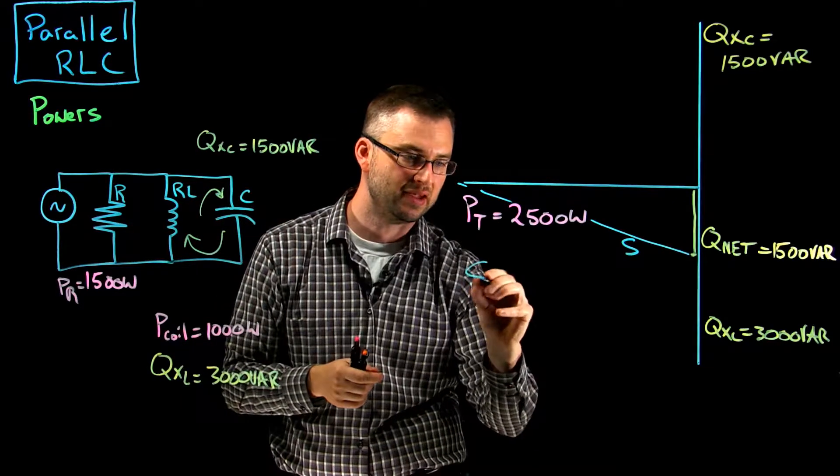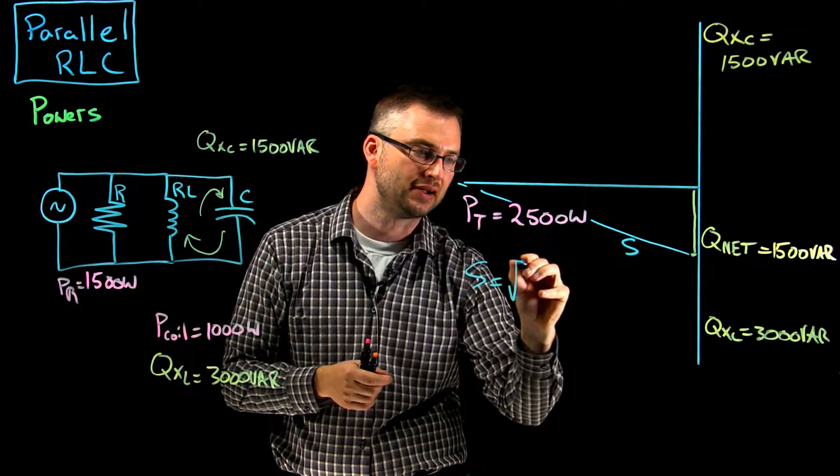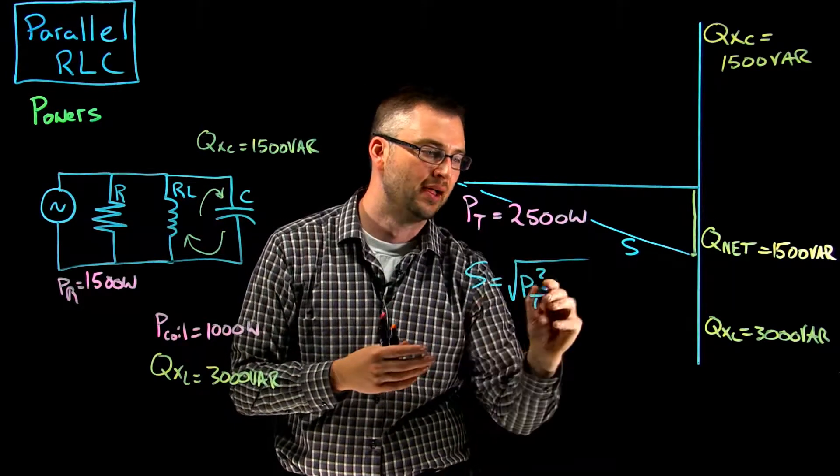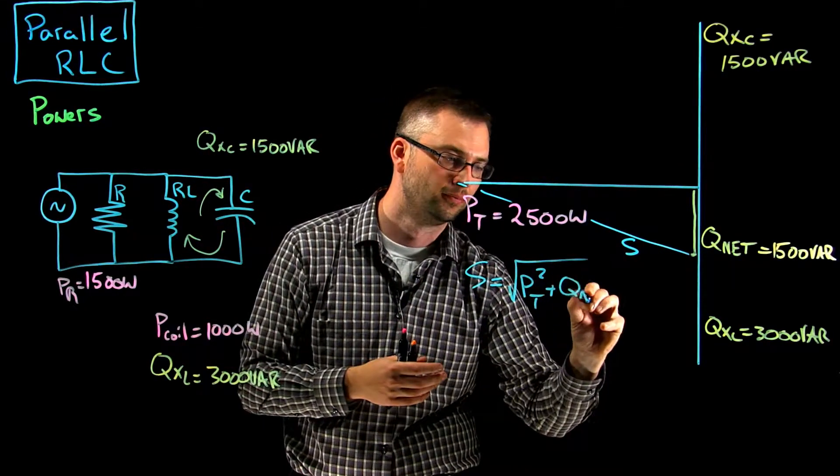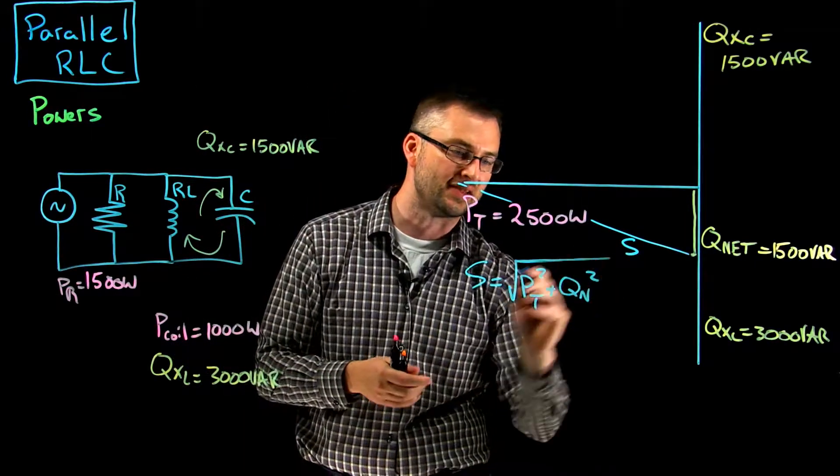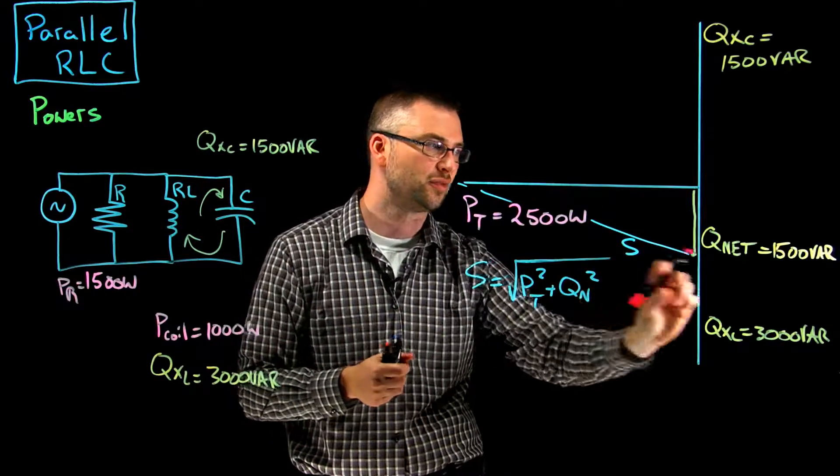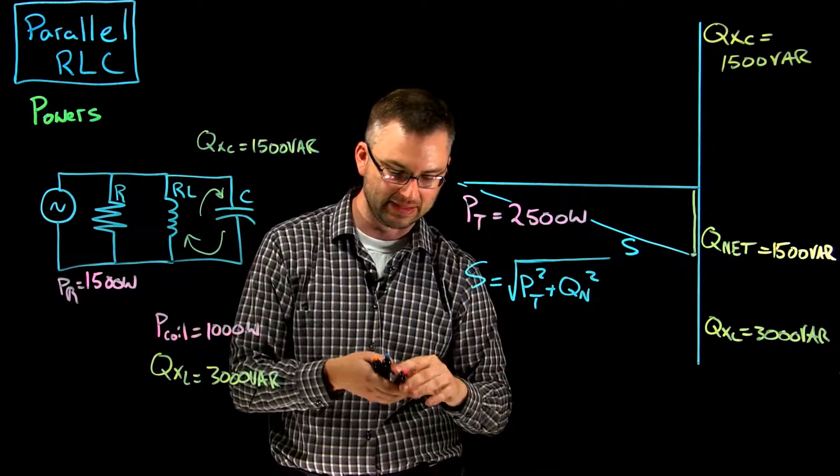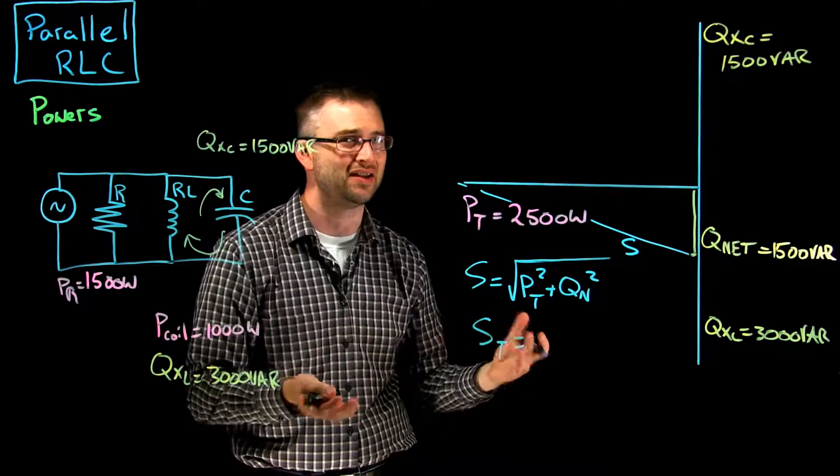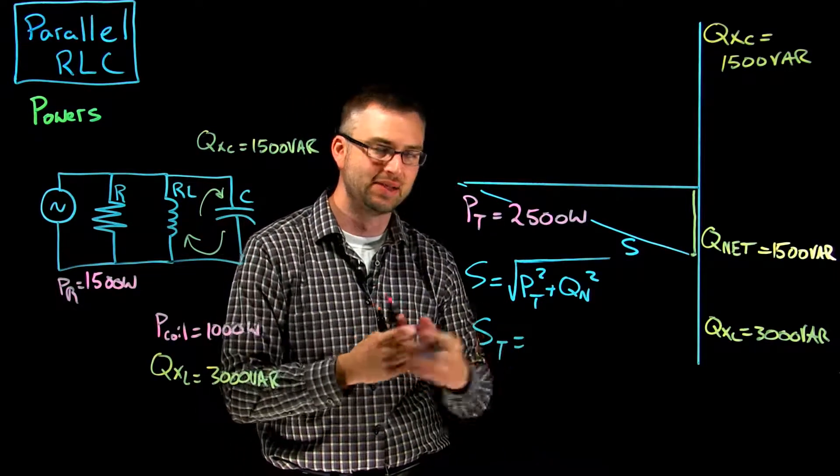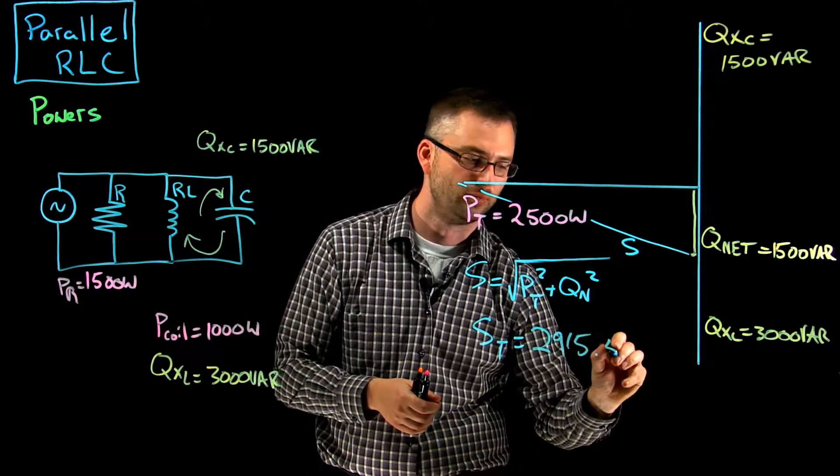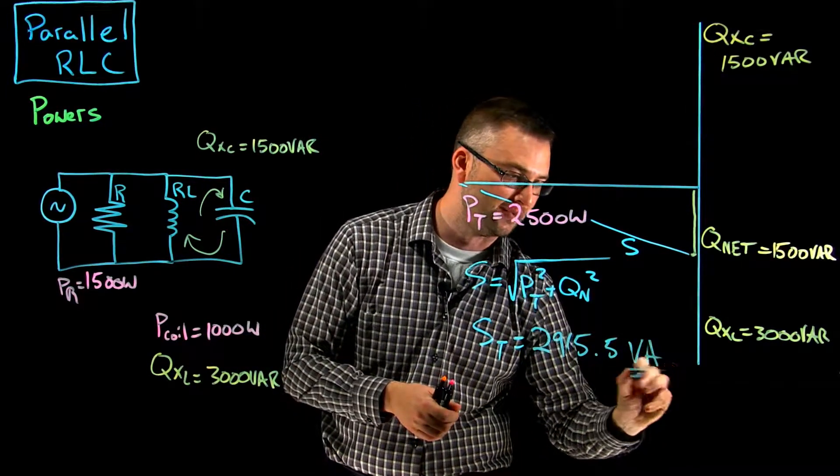So the S is going to be the Pythagorean theorem product of power total squared plus my Q net squared, take the square root of that, and we'll solve for the S total. So we do that, punch those numbers in, 2500 squared plus 1500 squared, and I get an S total, and S is kind of defined as a total of the circuit, but my S total will be 2915.5 VA.